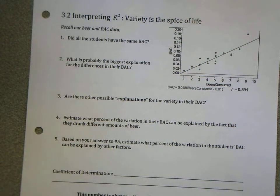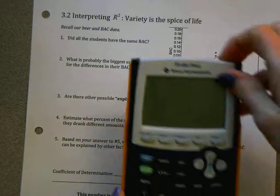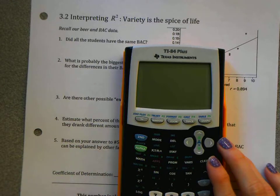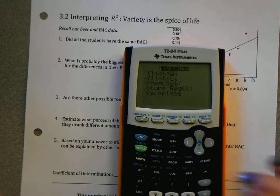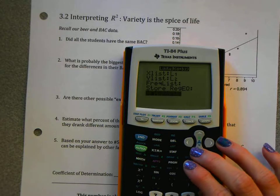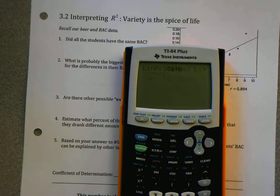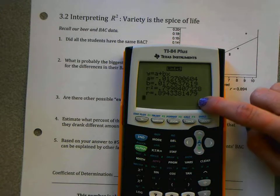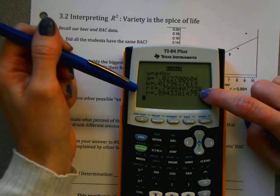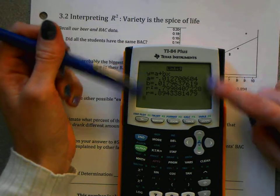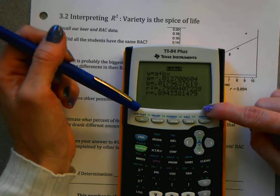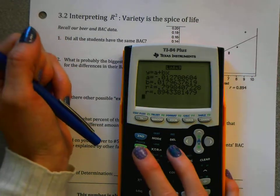All right, guys, last bit of notes. This is called interpreting R squared. If you notice, when we do Lin Reg on our calculator, I'm back to beer and blood alcohol content again, it actually comes up with four numbers: A, B, R squared, and R. So we're going to talk about that last number. By the time you finish this class, you should be confident on describing and understanding all four of those numbers.